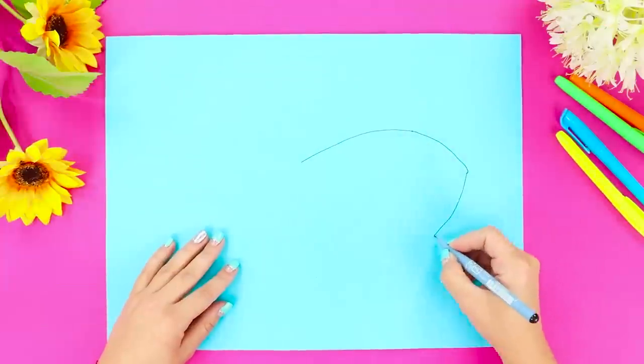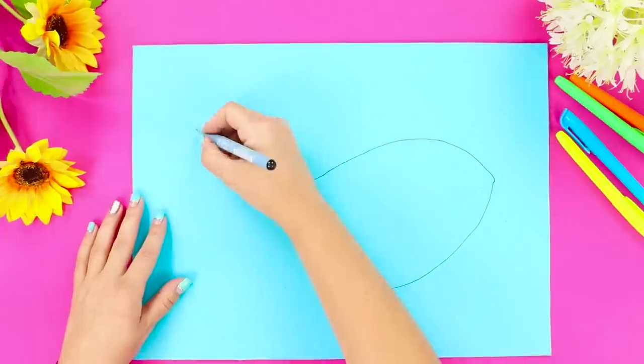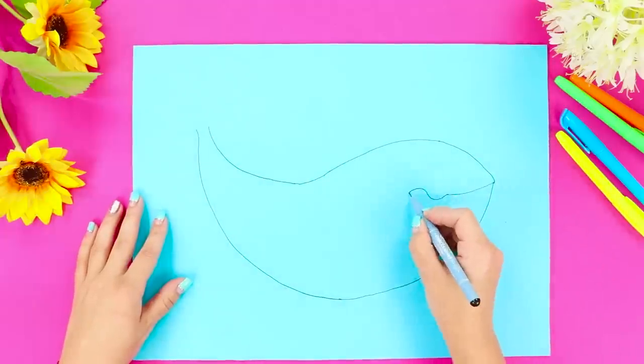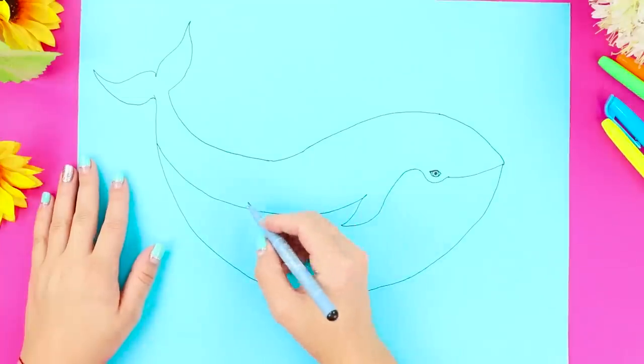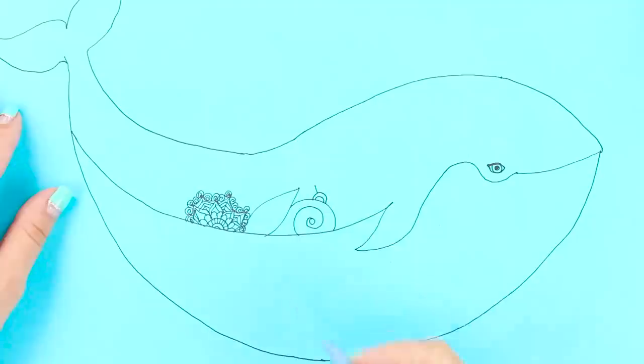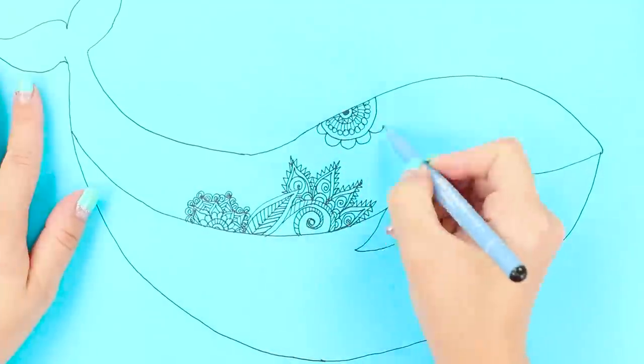Next, take a sheet of blue paper and a capillary pen. Draw a large whale, a big head, a tail, a fin, and an eye. Done! And now fill the whale with decorations! Let your imagination run free!